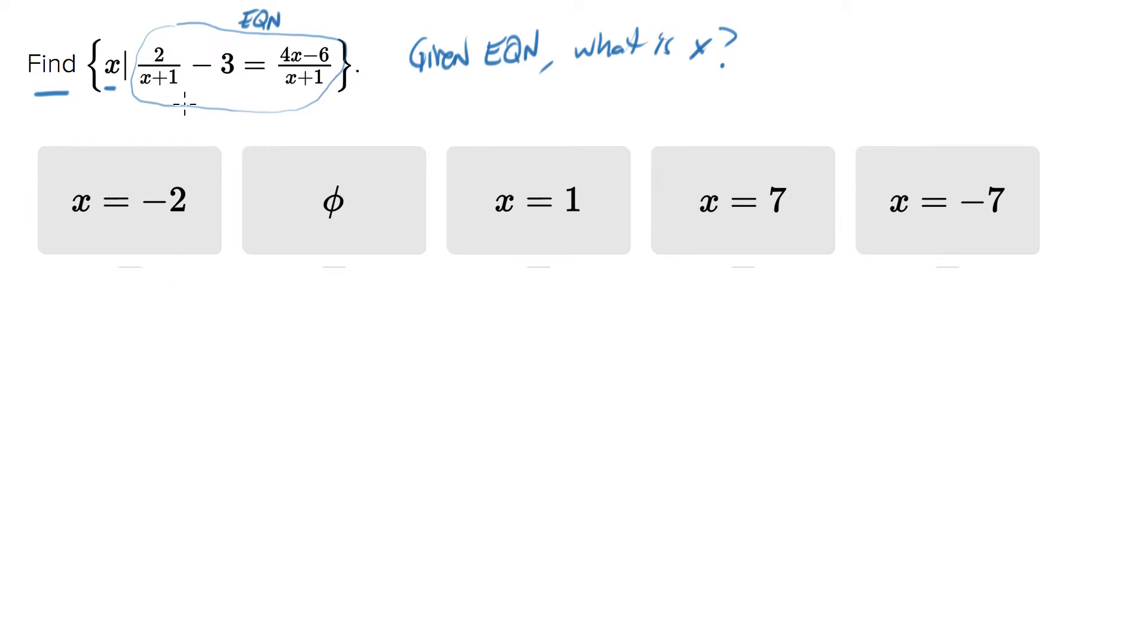So I'm going to multiply all the terms by X plus one because it looks like we're going to get some nice cancellation there. So we'll end up with two times X plus one over X plus one minus three times X plus one equals four X minus six times X plus one all over X plus one.